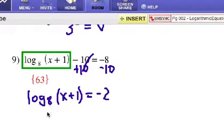Alright, so here's my base eight. Here's my exponent, negative two. Oops, I knew that didn't look right. Let's make that a positive two there, sorry. So, eight to the positive two power equals x plus one.